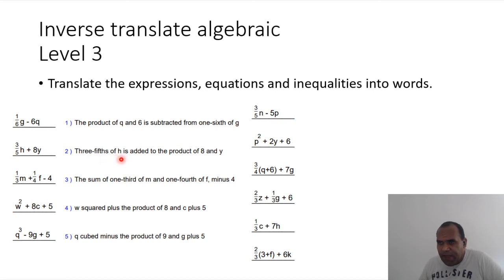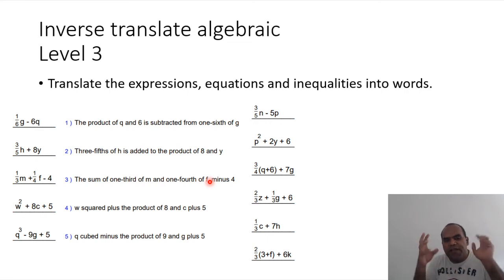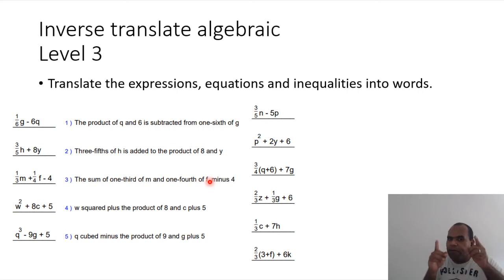'Three-fifths of h is added to the product of eight and y.' Next: 'the sum of one-third of m and one-fourth of f, minus four.' We have more than one term — yes, more than one — minus four. Remember: when you have a third term, you need a comma to separate the new one.